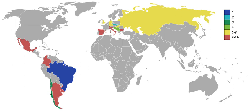UEFA Group 1: Sweden and Switzerland finished level on points, and a playoff on neutral ground was played to decide who would qualify. Switzerland qualified. UEFA Group 2: Bulgaria and France finished level on points, and a playoff on neutral ground was played to decide who would qualify. Bulgaria qualified.